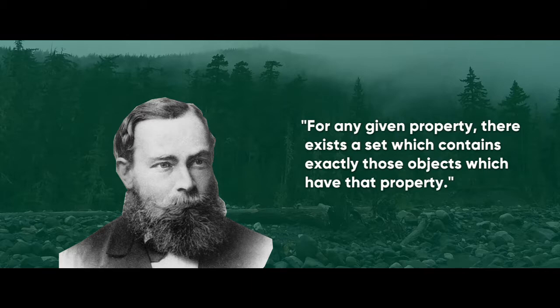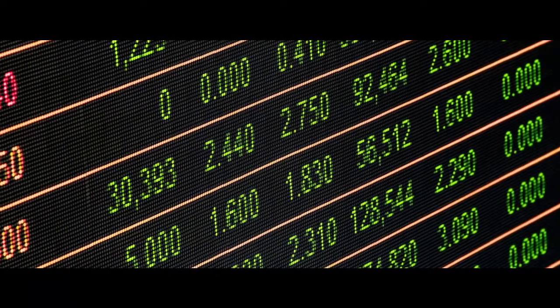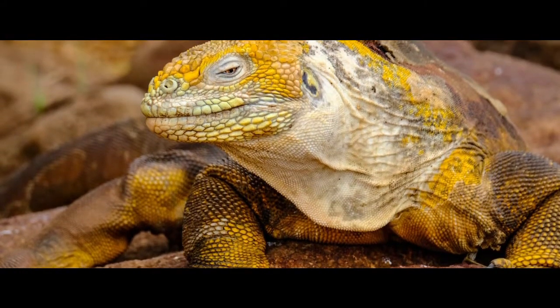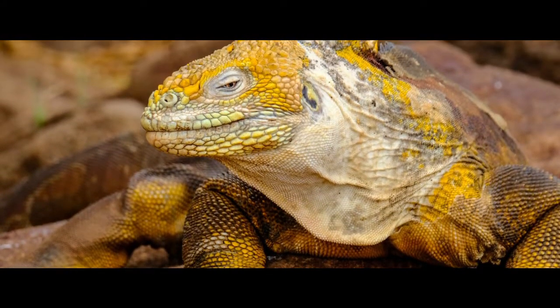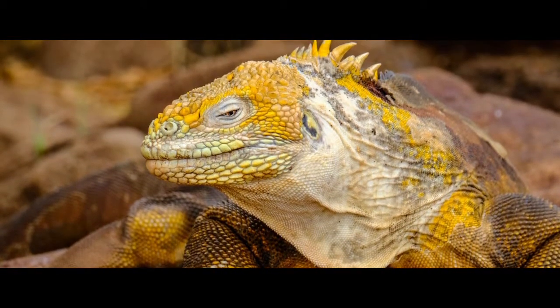So let's brainstorm some sets that we can construct utilizing this. The set of all numbers? Sure, it's all objects with the property of describing quantity. The set of all reptiles? Yeah, it's all objects with the property of being cold-blooded, scaly, air-breathing vertebrates. I'm sure a biologist would have a better definition than that, but c'est la vie.